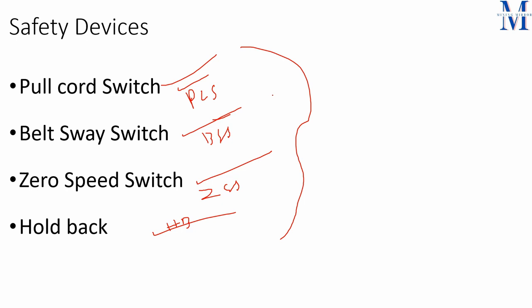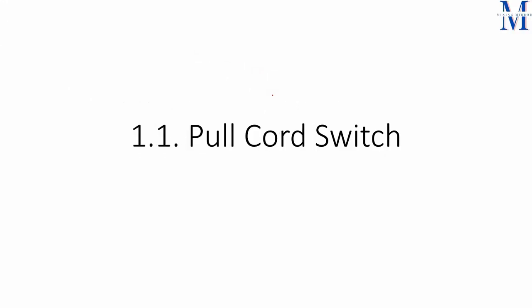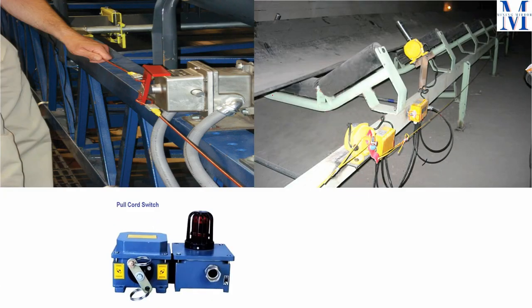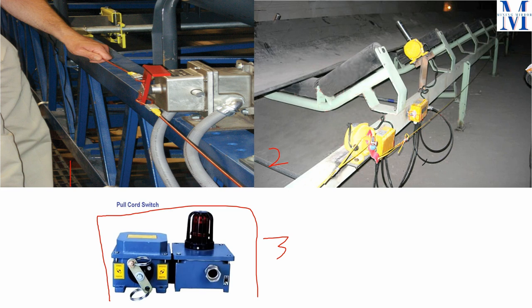Now let's see the first one: the pull cord switch. The name itself tells you — you have to pull the cord. There are three figures — figure 1, 2, and 3. This is the pull cord switch. The cord is connected to the main switch, and this whole device is installed along the conveyor.